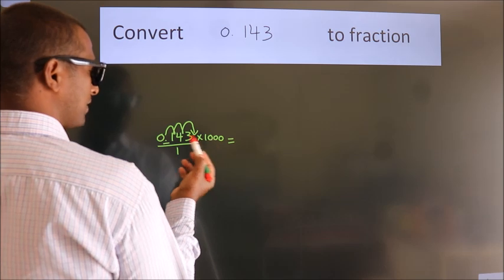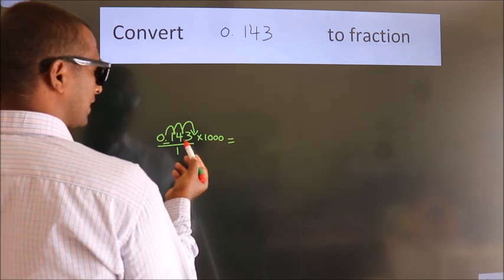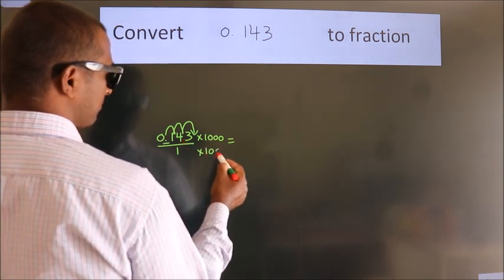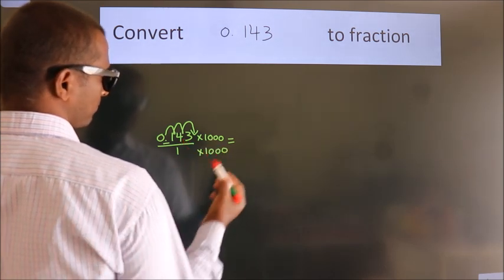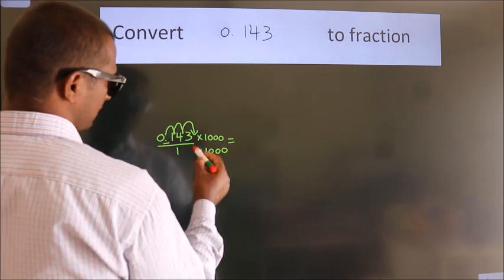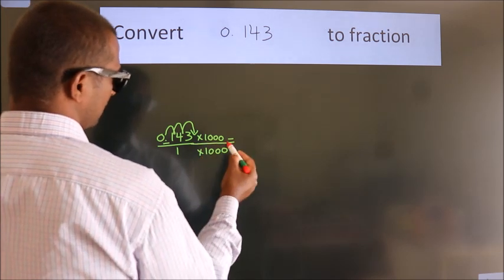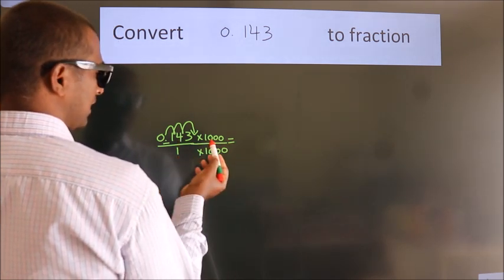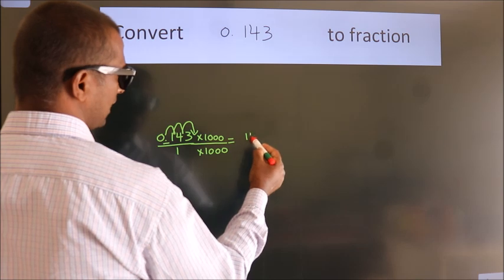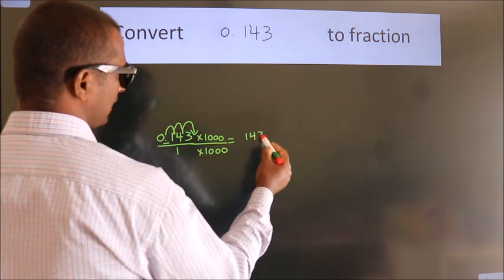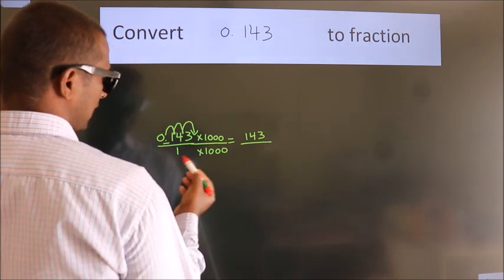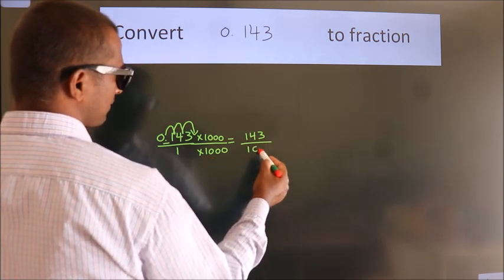Whatever we are multiplying in the numerator, in the denominator also do the same. So, 0.143 multiplied by 1000 gives 143, and 1 multiplied by 1000 gives 1000.